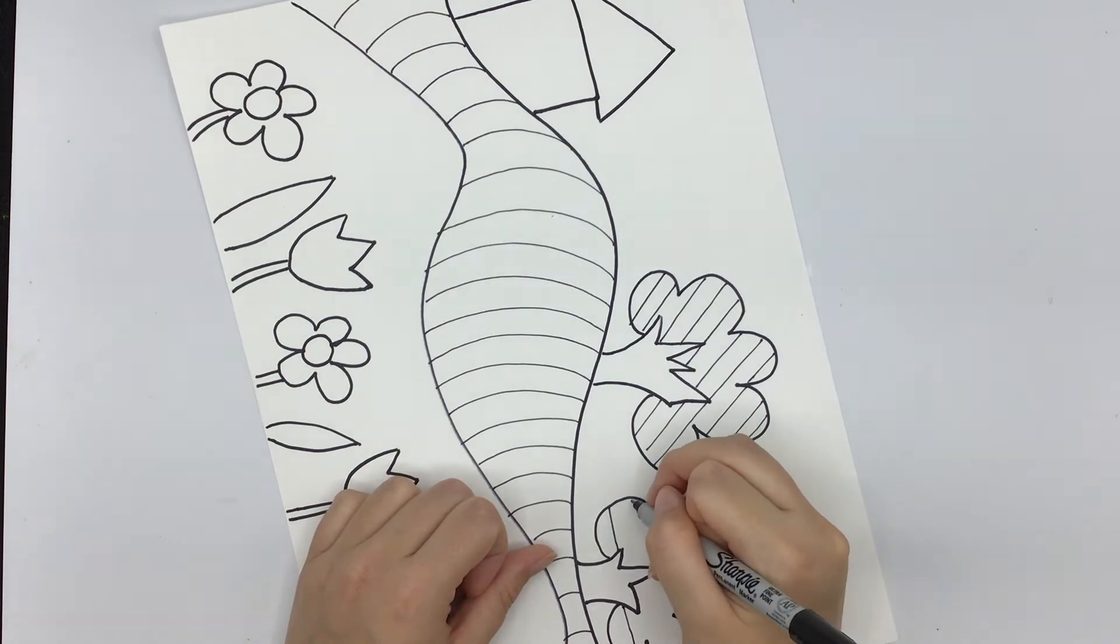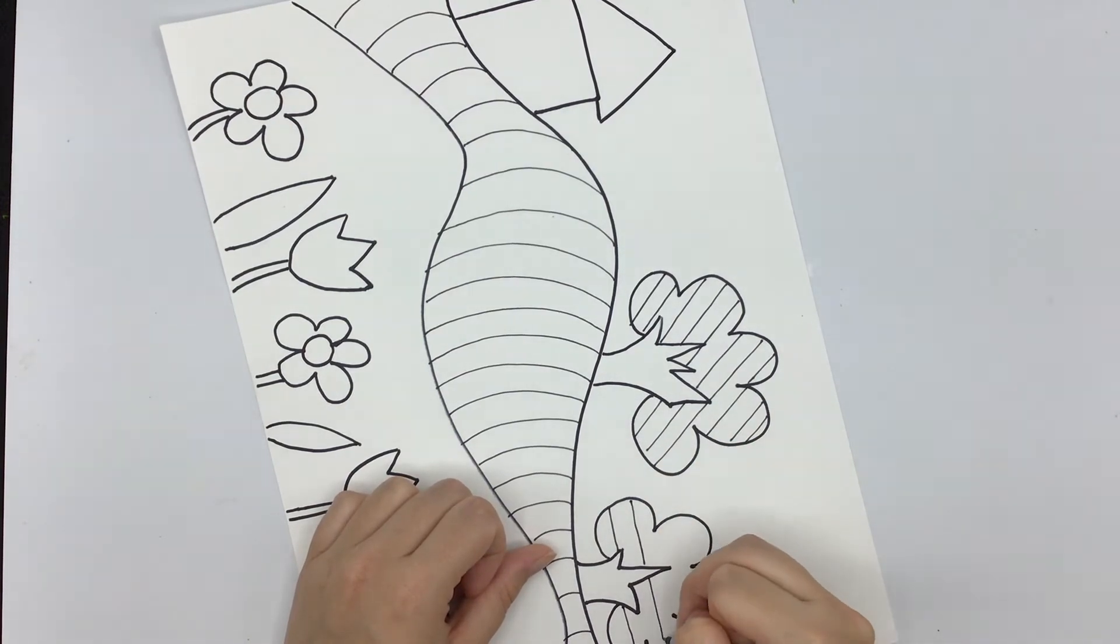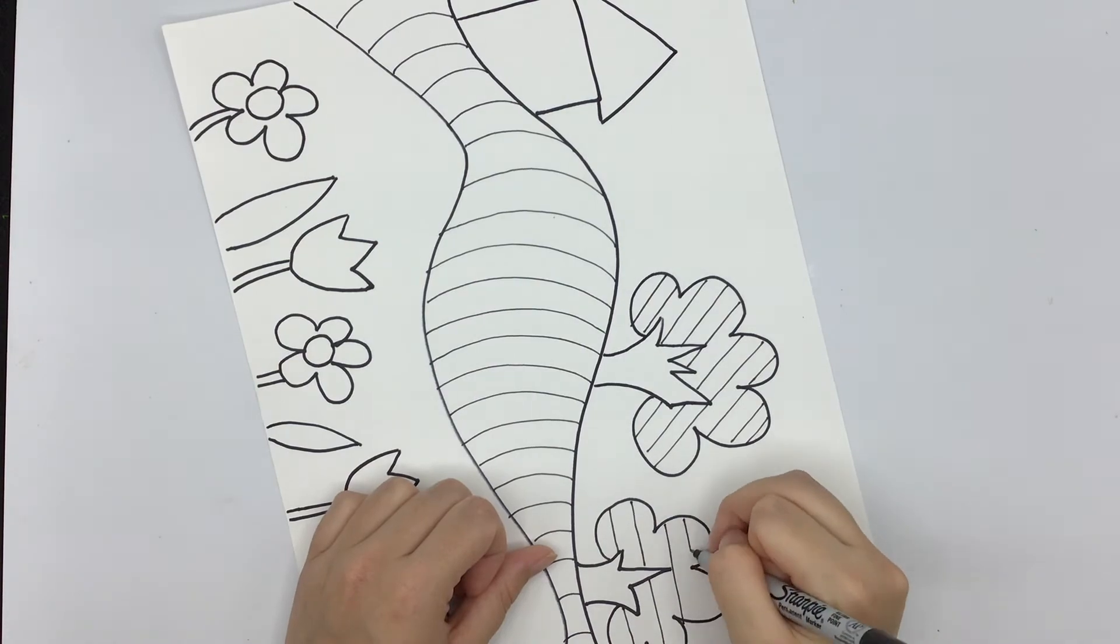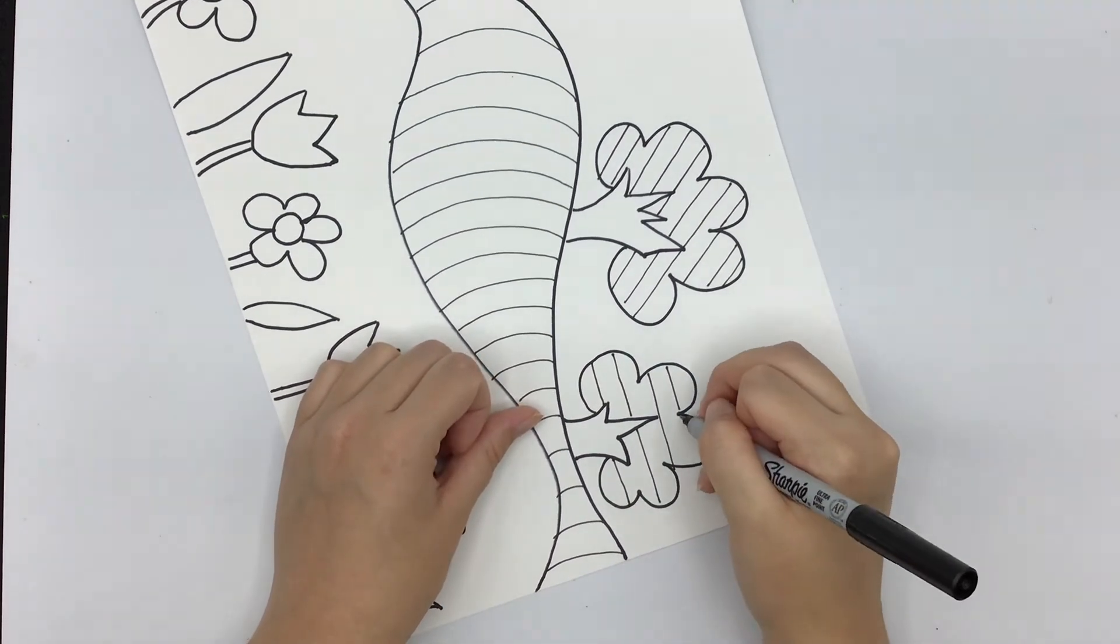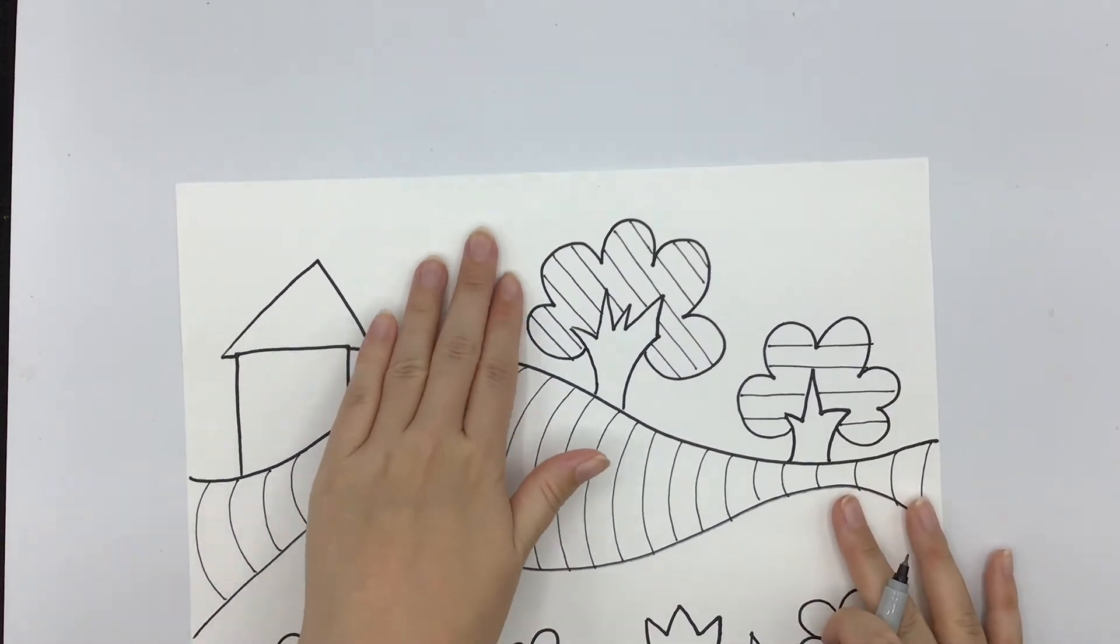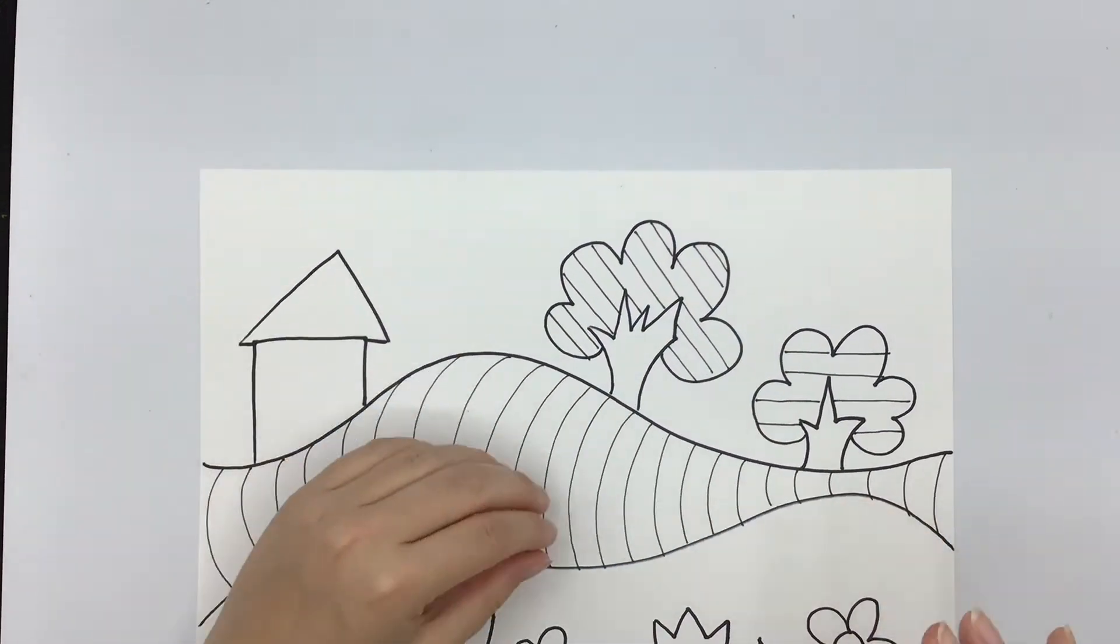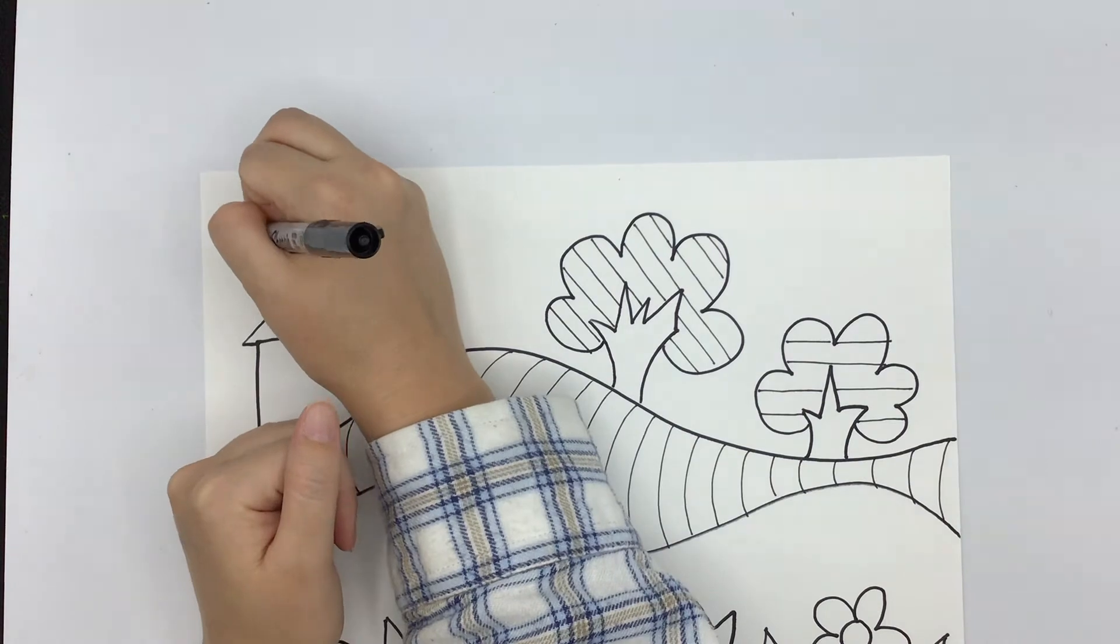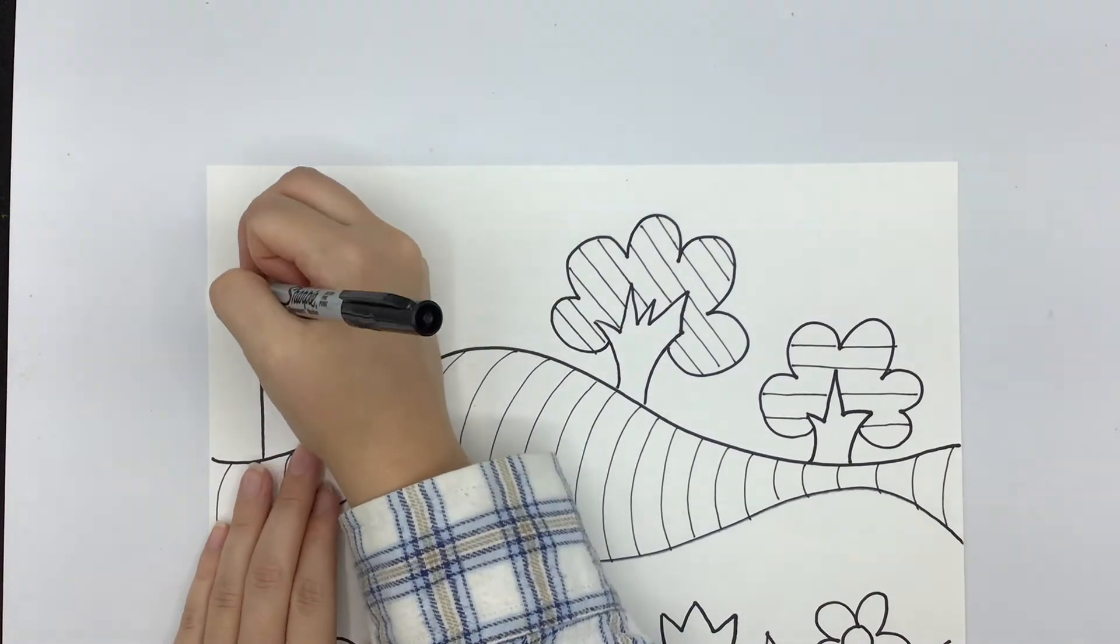Maybe I want some horizontal lines on this tree. And then last but not least we have this huge space on the top. I think I'm going to fill it up with polka dots.